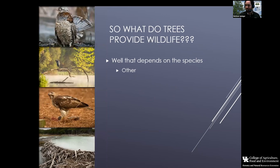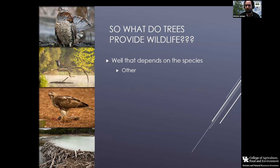Sometimes the ways trees help wildlife are not immediately obvious — things like drum logs for grouse, where without a log to display on, they'll have a hard time attracting a mate. It can be hunting perches for herons or raptors, or the material beavers use to dam up a river and create the pond and habitat they need. There are a bunch of different things trees provide for wildlife.